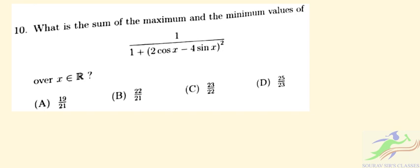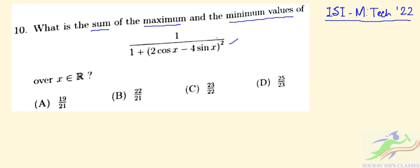Hello students, welcome to Show Up Sir classes. In this particular video, we will see the solution of the ISI admission test for the M.Tech programs of 2022 paper. Question 10 asks: what is the sum of the maximum and minimum values of this function? We take f(x) = 1 divided by (1 + (2cos x - 4sin x)²).